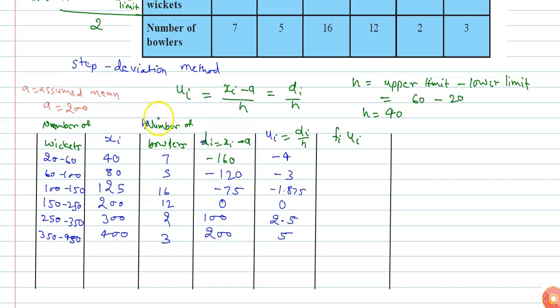7 times minus 4 equals minus 28, 5 times minus 3 equals minus 15, 16 times minus 1.875 equals minus 30.